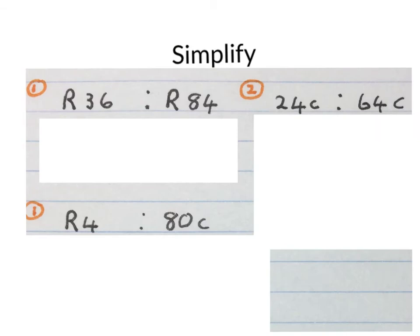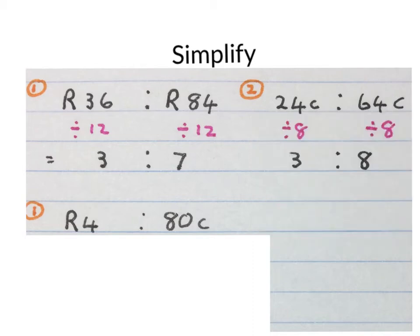Let us simplify the following three ratios that involve money. The highest common factor of 36 and 84 is 12. So we divide 12 in here and 12 in there. The simplified version will be 3 to 7. Now 24 cents to 64 cents. Because we can divide 8 into both of them it will simplify to 3 to 8.